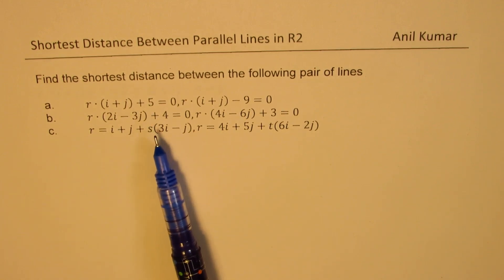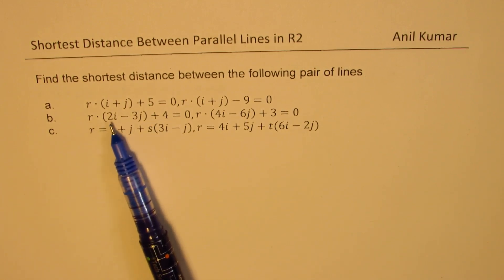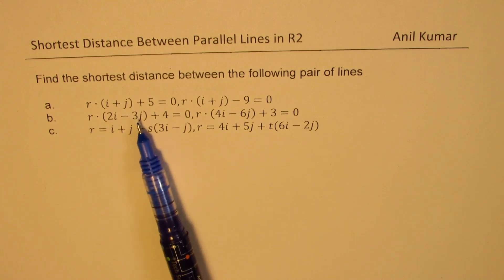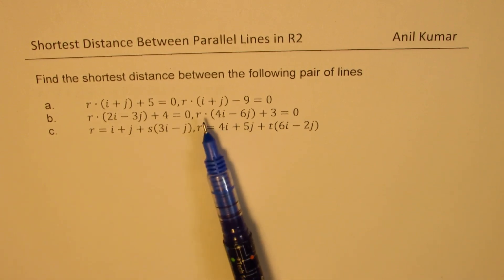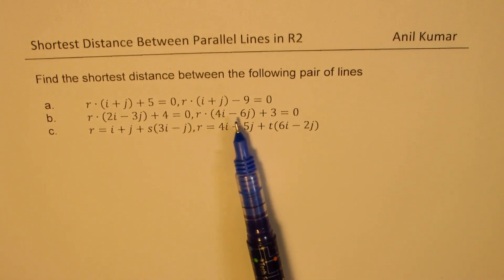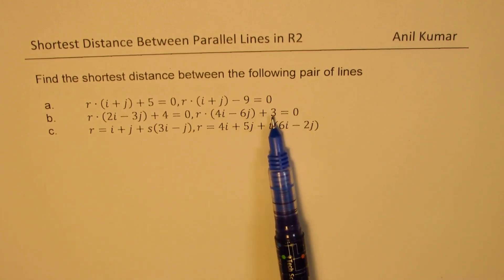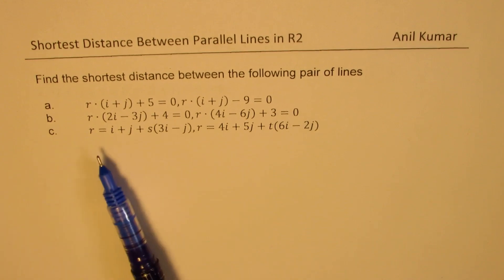We have another example: r dot (2i minus 3j) plus 4 equals 0, and r dot (4i minus 6j) plus 3 equals 0.